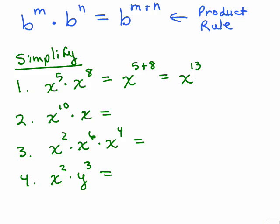What is the exponent on X? It's not there, but it's a 1. X is the same thing as X to the first power, because there's only one factor of X. So this would be X to the, if you add exponents, 10 plus 1 is 11.